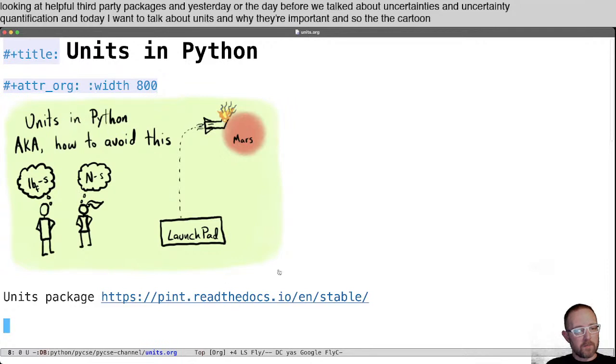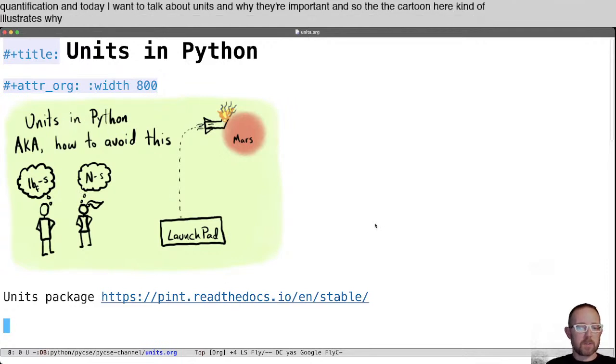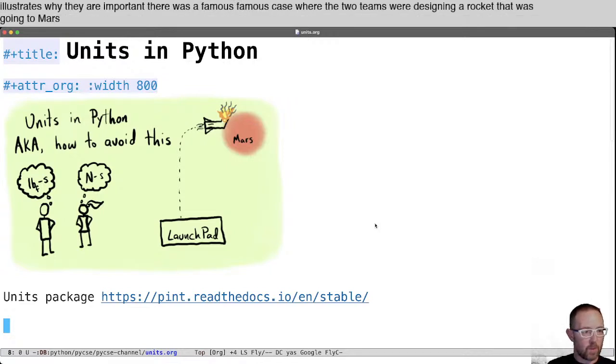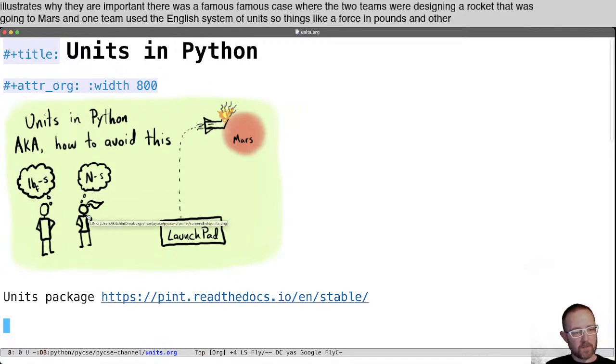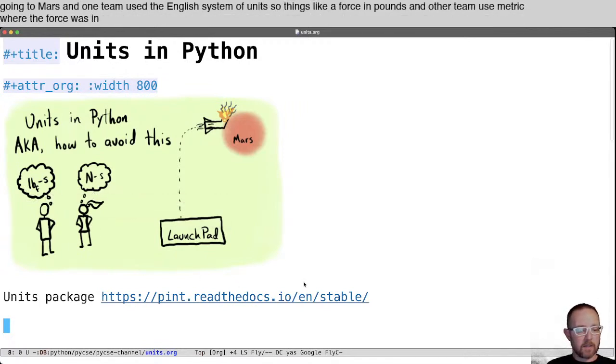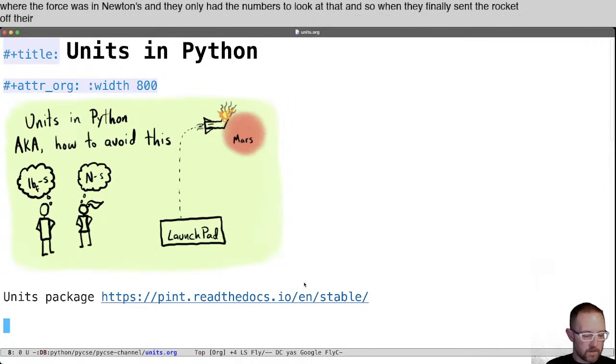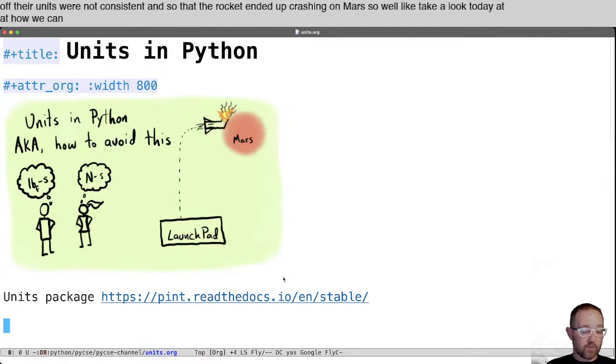And so the cartoon here kind of illustrates why they're important. There was a famous case where two teams were designing a rocket that was going to Mars. And one team used the English system of units, so things like force in pounds. And the other team used metric where the force was in newtons. And they only had the numbers to look at. And so when they finally sent the rocket off, their units were not consistent. And so the rocket ended up crashing on Mars. So we'll take a look today at how we can try to avoid issues like that by incorporating units into our calculations.